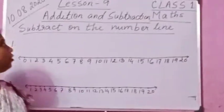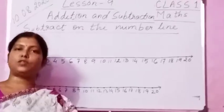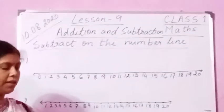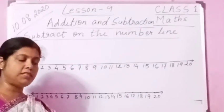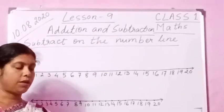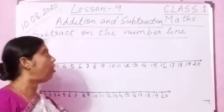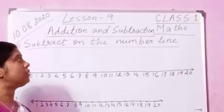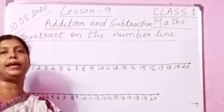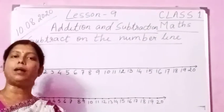Good morning children. We shall continue lesson 9 in class 1 maths. This is addition and subtraction up to 20. We are doing addition and subtraction up to 20. Here we are doing it on the number line. I have already taught you how to add on the number line. Today we are going to learn how we will subtract on the number line.